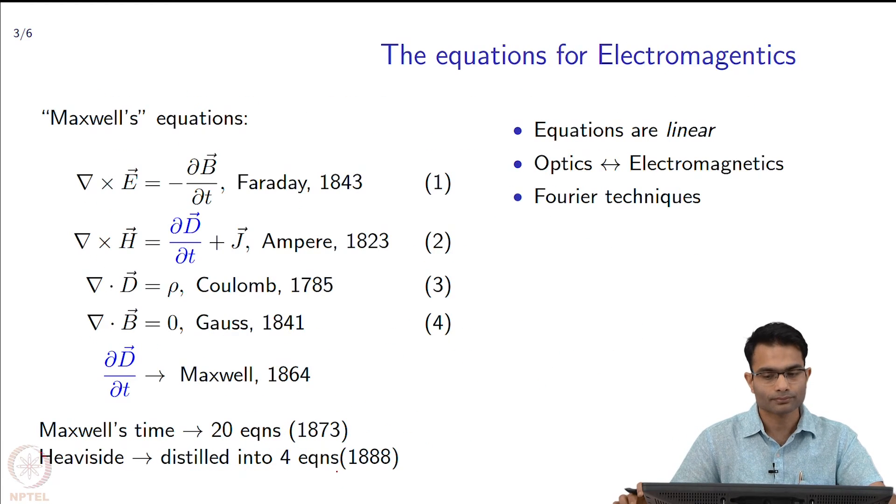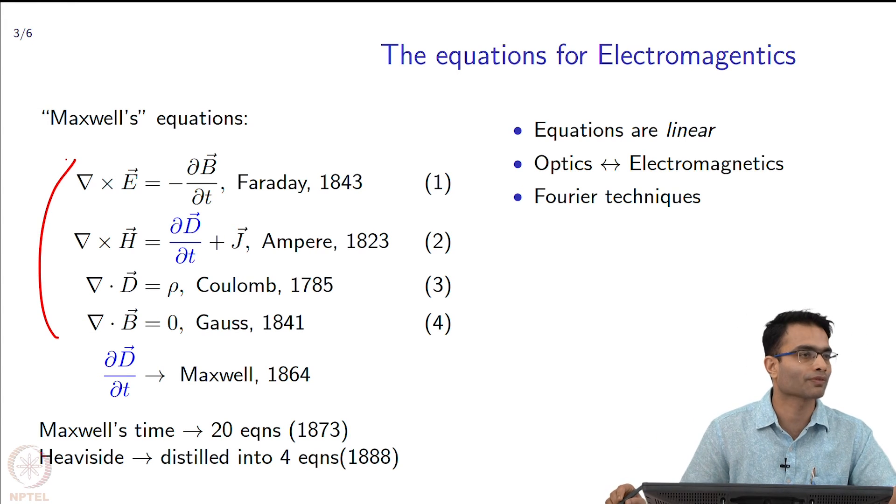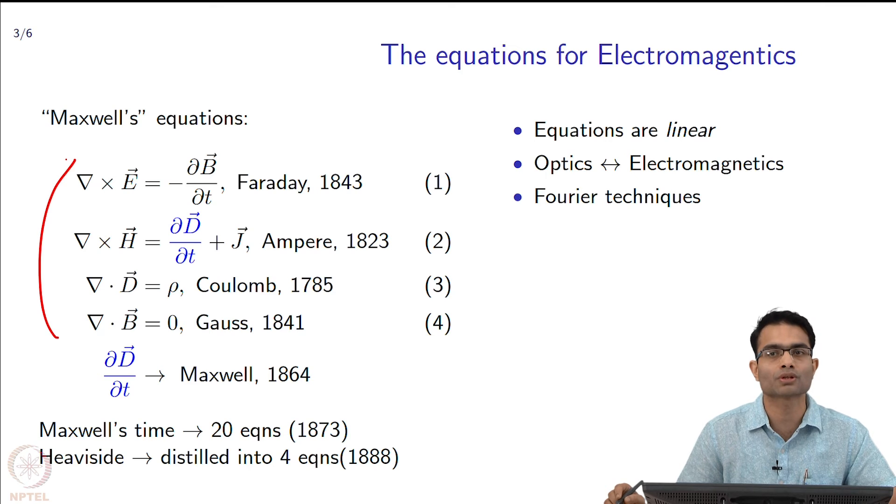Then let us come to the equations of electromagnetics. We will have a separate review lecture for the equations of Maxwell, but this is again part of history, which any student of electromagnetics should know. What I have written over here, these are the 4 modern equations of electromagnetics, but the story was not always this way.